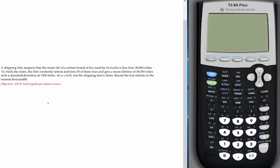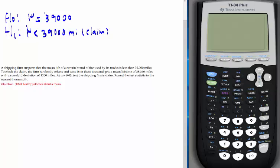A shipping firm suspects that the mean life of a certain brand of tire used by its trucks is less than 39,000 miles. Let's write the hypotheses: mean less than 39,000 is the claim, this is H1. H0 has mean equals 39,000. To check the claim, the firm randomly selects and tests 18 tires, so n=18, and gets a mean lifetime of 38,350, so x-bar is 38,350 miles, with a standard deviation of 1,200 miles, so s=1,200. At alpha equals 0.05, test the claim.